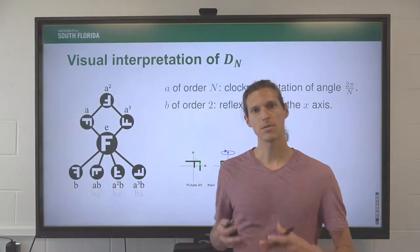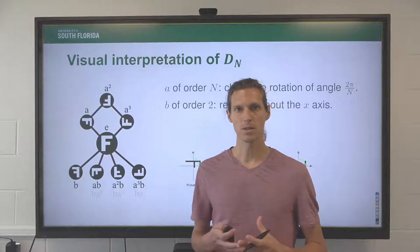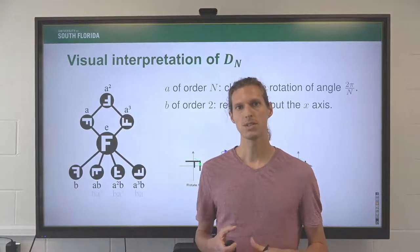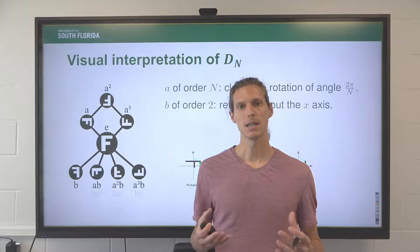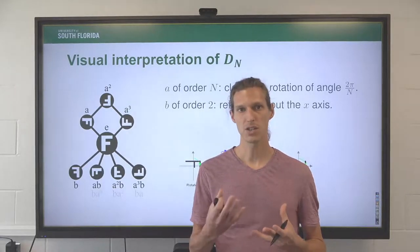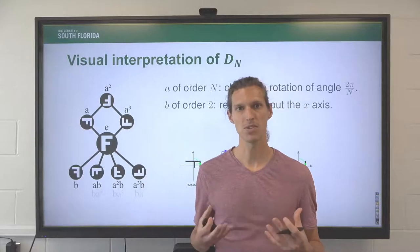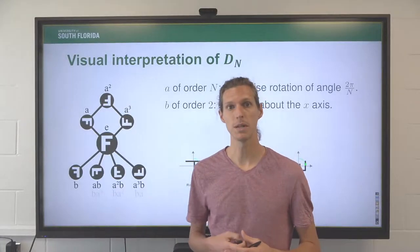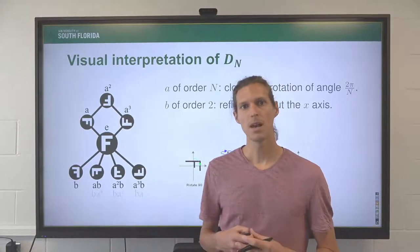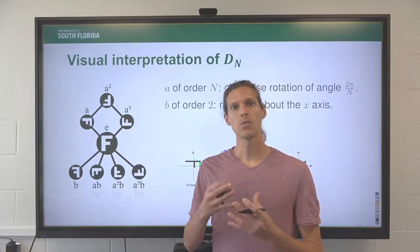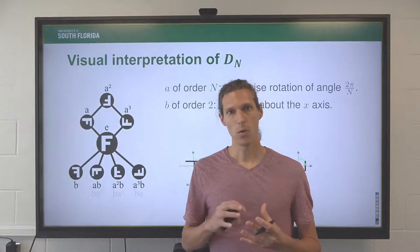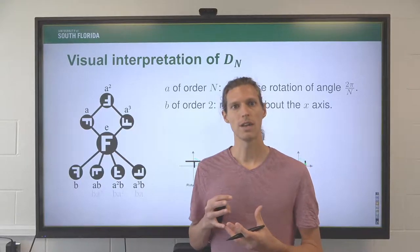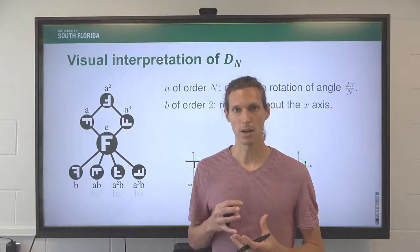There is a last way to interpret D sub n: a visual interpretation. D_n can be viewed as a group of rotations and reflections and how you compose them on a picture. For example, here we have a picture of an F taken from the Wikipedia page of the dihedral group.